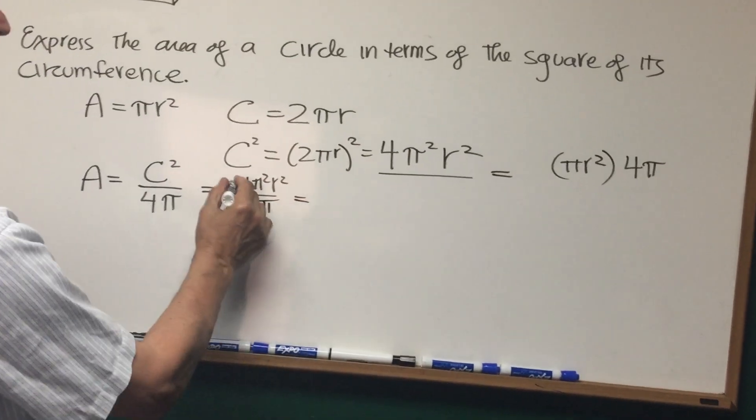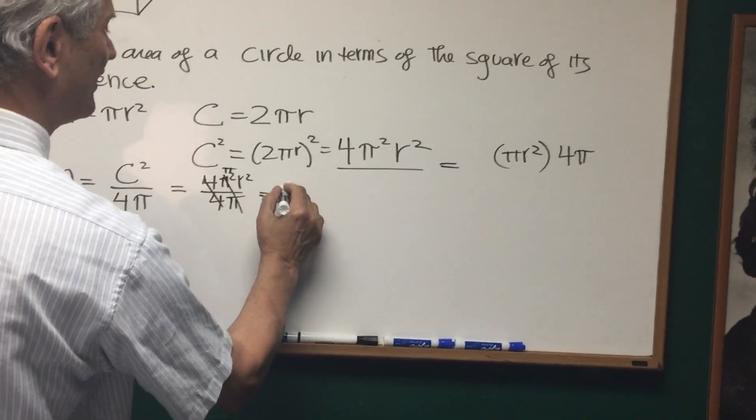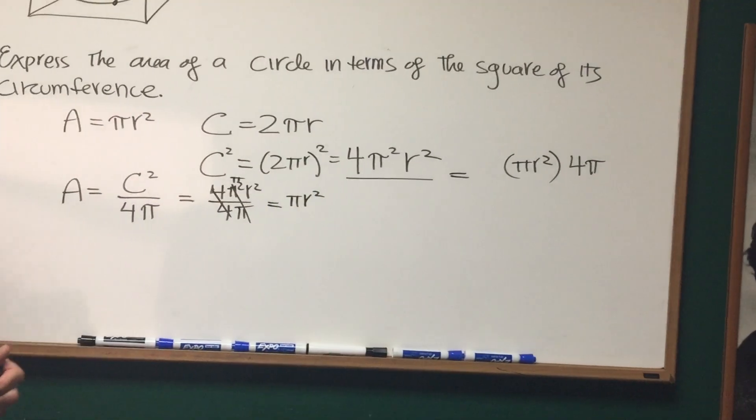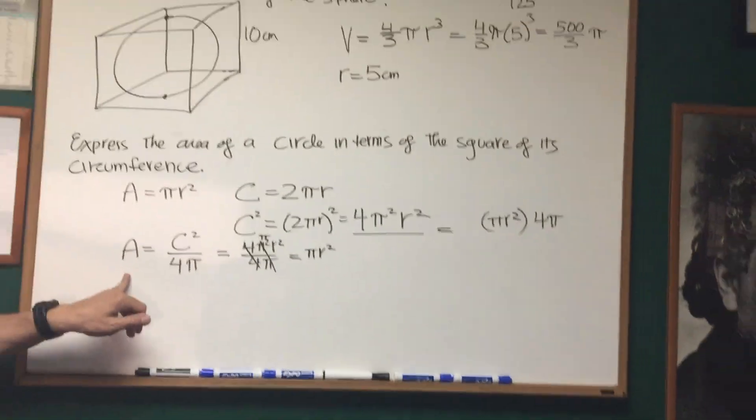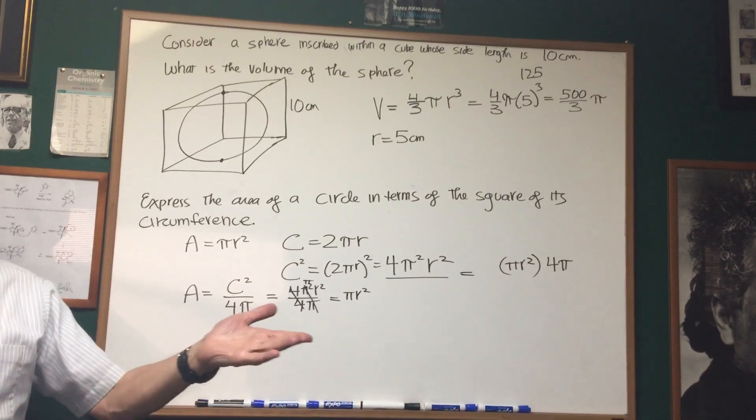And we see that the 4s cancel out, one of the powers of the pi cancels out, and we get our pi r squared. So there's our expression area in terms of the circumference. Circumference squared divided by 4 pi. And that's the problem.